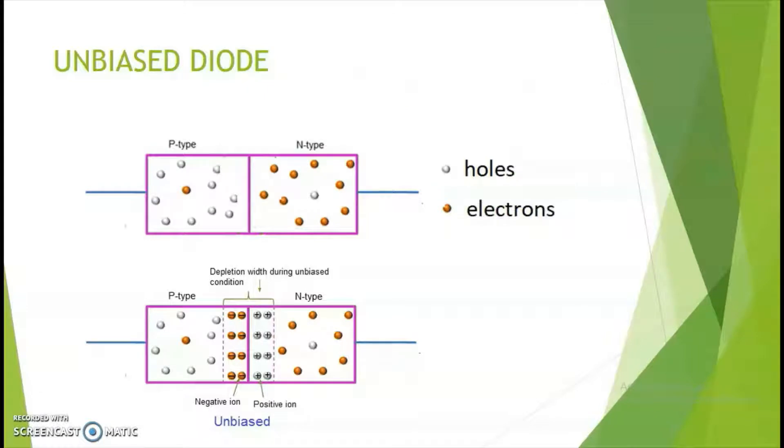As a first case, let's study about what happens in an unbiased diode. The P-type material has got majority carriers as holes and minority carriers as electrons. It is shown by white and yellow dots. For N-type, we have electrons which are the majority carriers and holes which are the minority carriers.